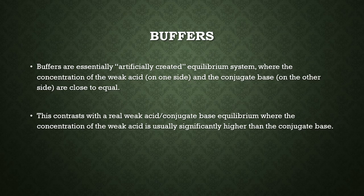Buffers are essentially artificially created equilibrium systems where the concentration of the weak acid and the conjugate base are close to being equal. We can artificially create them in the lab really easily — for example, we might take some ethanoic acid, which is not a buffer, but if we get some sodium ethanoate crystals and dissolve them in the acid, then we can create a buffer solution. Buffers can also be made in natural systems, usually because of the presence of one or two particular substances — for example, the rocks of a lake bed can contribute ions to the water and create a buffer system.